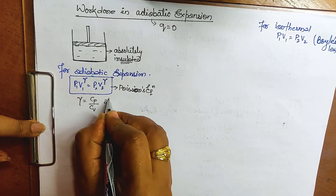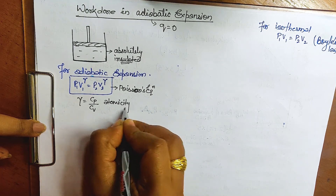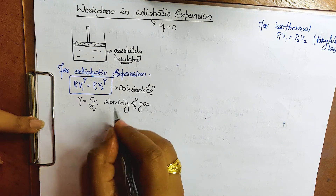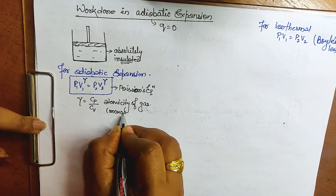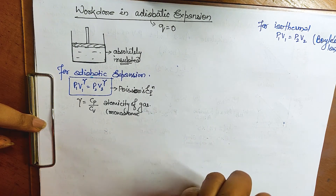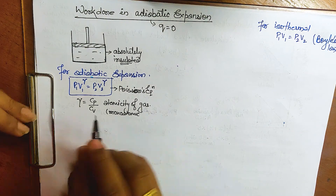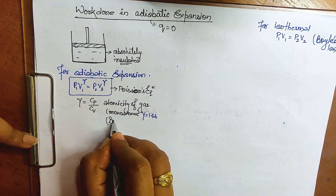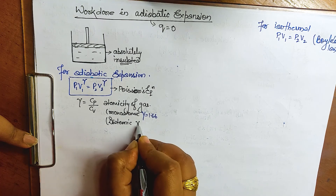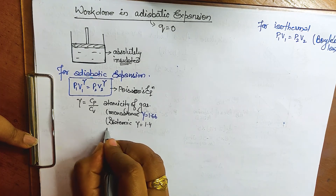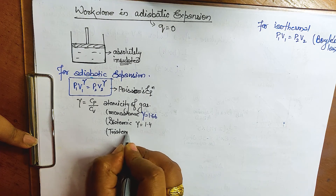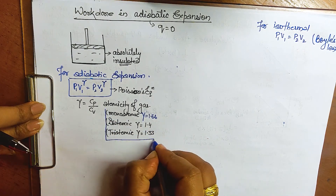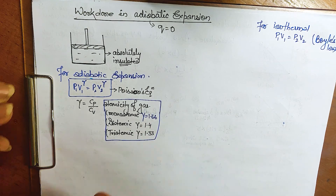Gamma gives the atomicity of the gas. The gas can be monoatomic, diatomic, or triatomic. For monoatomic gases like helium and neon, gamma = 1.66. For diatomic gases, gamma = 1.4. For triatomic gases, gamma = 1.33. You have to learn these values.